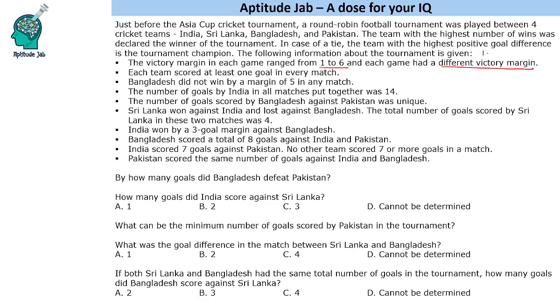That means the victory margins are 1, 2, 3, 4, 5, and 6 — all different. Each team scored at least 1 goal in every match. Some more information is given about the teams.